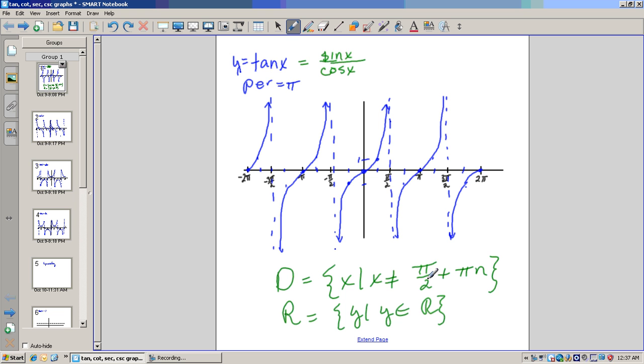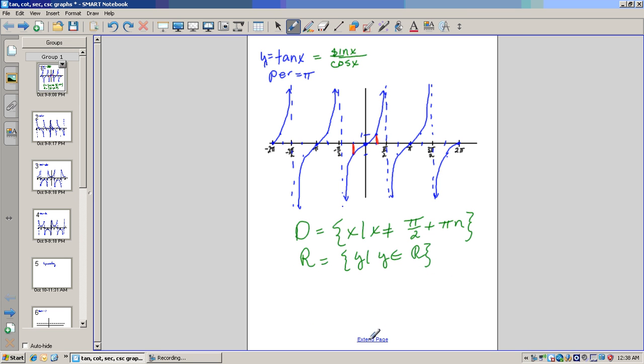Now let's talk about the symmetry. Tangent of pi over four is one. Tangent of negative pi over four is negative one. So tangent of negative x is equal to the opposite of tangent of x. F of negative x equals negative f of x. What kind of functions have that property? Odd functions. So tangent is an odd function.